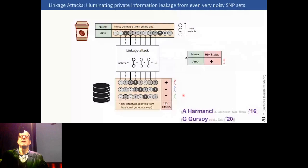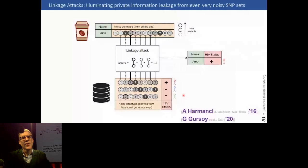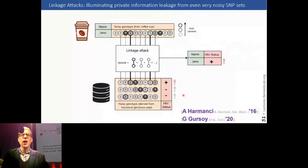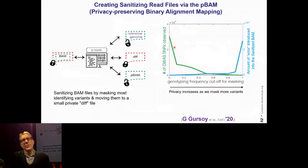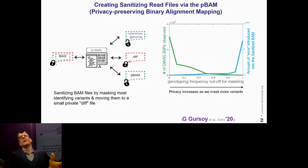With talented postdoc Gamze Gursoy in my lab, we thought about maybe there's a way when we do this linking that we prioritize certain SNPs — we know rare SNPs count a lot. We got into the idea of sanitizing genomic files by selectively removing certain SNPs without really hurting their utility in a lot of calculations. We came up with this idea of a sanitized BAM file — a public PBAM file — where you would push the most individual variants off into an encrypted diff file.